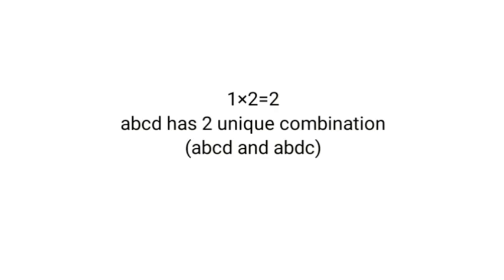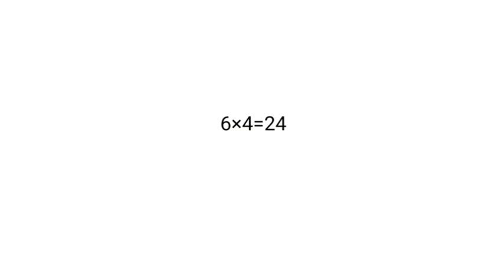Now we find how many unique combinations ABCDE has. We know ABCD has two unique combinations, so: unique combinations of ABCDE equals 2 times 3, which is 6. The next time we would multiply by 4. So for a 6-letter set, the number of unique combinations in one unique combination group is 6 times 4, which equals 24.